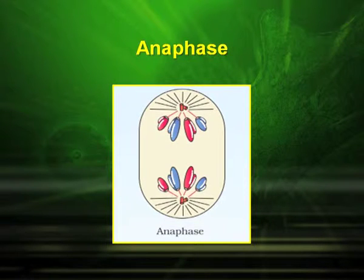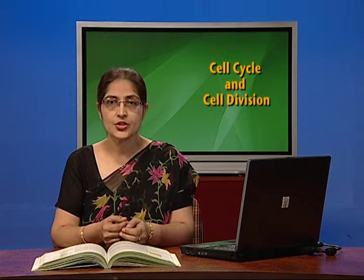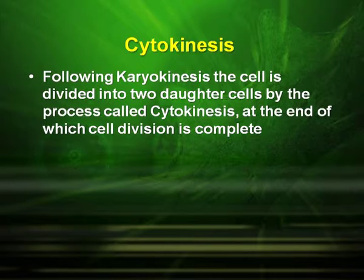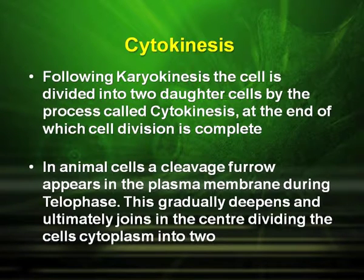Diagrammatically, telophase would appear as seen in this picture. Following the nuclear division, which is known as karyokinesis, the cell is divided into two daughter cells by the process called cytokinesis, at the end of which cell division is complete. In animal cells, a cleavage furrow appears in the plasma membrane during telophase. This gradually deepens and ultimately joins in the center, dividing the cell cytoplasm into two.